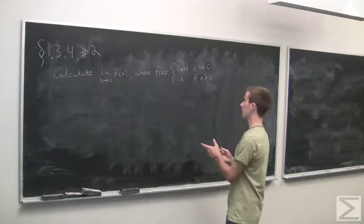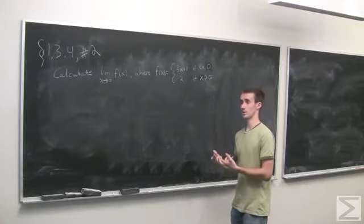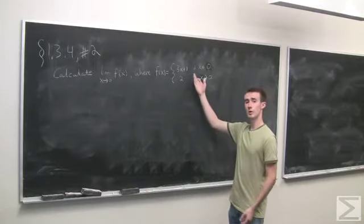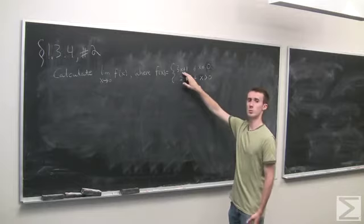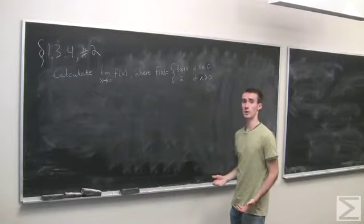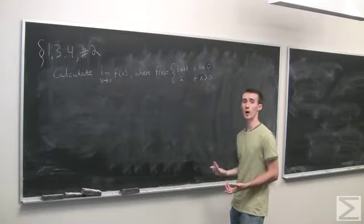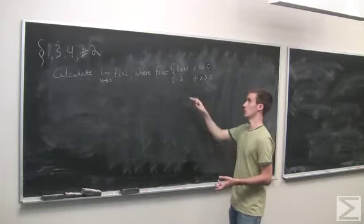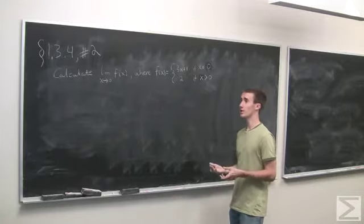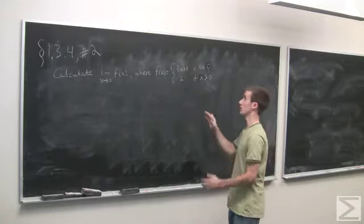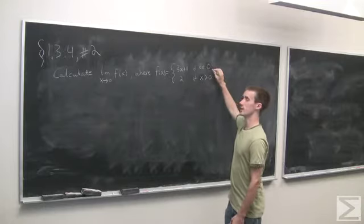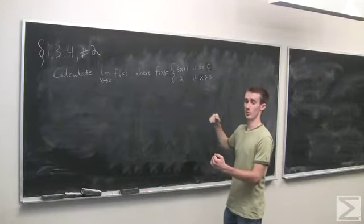The first thing I think of when I look at this problem is it's defined piecewise. Now both pieces of the function, 3x plus 1 and 2, are continuous. So there's going to be no problem evaluating a limit anywhere just on these functions. But when we have piecewise defined functions, the problem usually comes in at the point where the function changes.